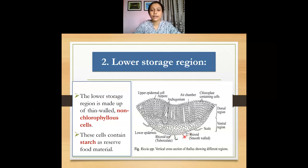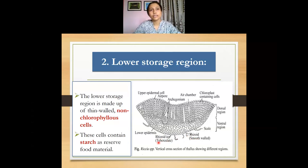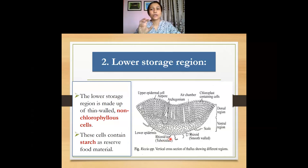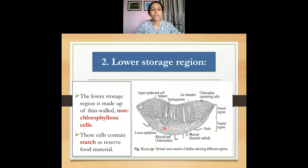These appendages are of two types: the first type is called the rhizoid and the second type is called the scale. Rhizoids are again of two types — smooth-walled rhizoids and tuberculated rhizoids. Whether smooth-walled or tuberculated, the function of rhizoids is to help in anchorage to the substrate, allowing the plant to grow on moist soil or rock surfaces. The function of scales is to act as a conducting tissue, carrying water to the cells of the thallus.